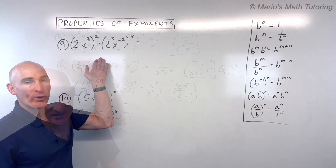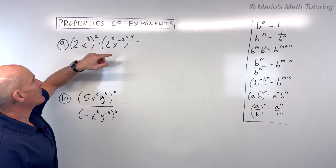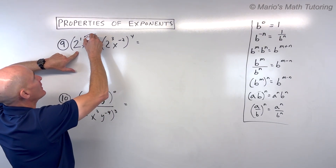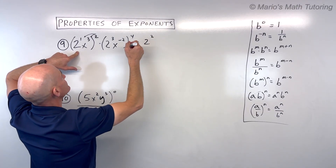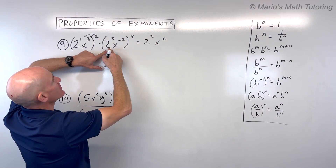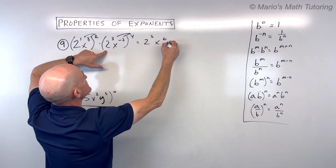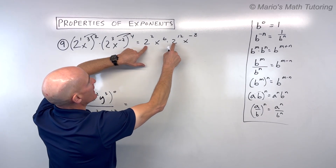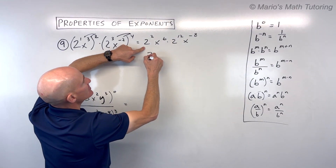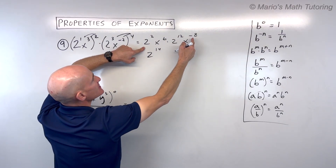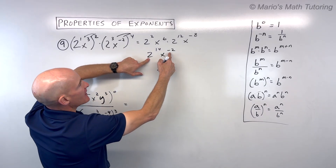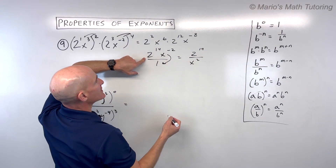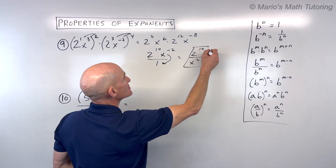For number 9, we have a product to a power in the numerator. Power to power, multiply: 1 times 2 gives 2 squared, 3 times 2 gives x to the 6th. On the other side, also product to a power: 2 to the 12th, x to the negative 8th. When multiplying same-base terms, add exponents: 2 plus 12 is 14, and 6 plus negative 8 is negative 2. Moving x to the negative 2 to the denominator gives the final answer of 2 to the 14th over x squared.